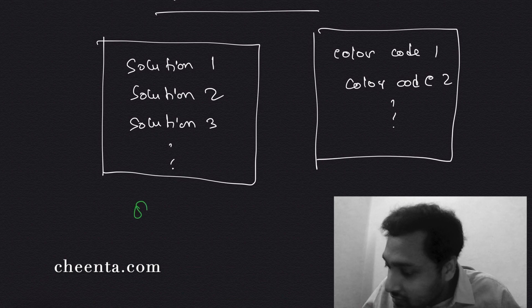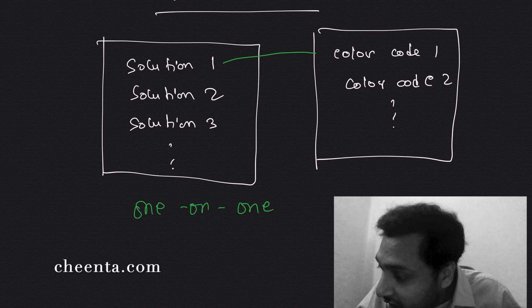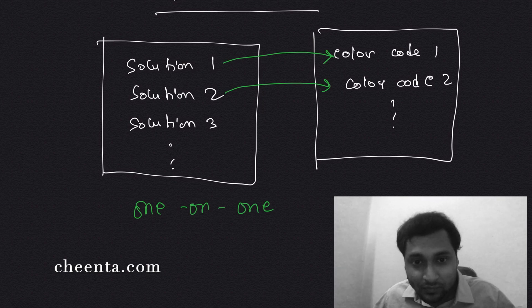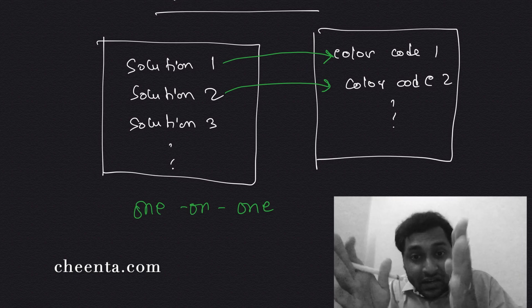So there is a one-to-one onto mapping. What do I mean by that? By one-to-one, I mean that for every color code there is a unique solution. So no two solutions are mapping into the same color code. Two solutions, if the solutions are different, the corresponding color code must be different.